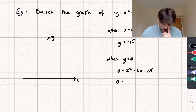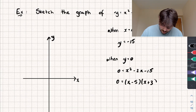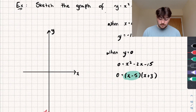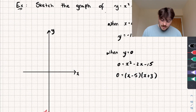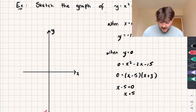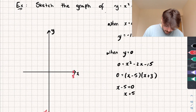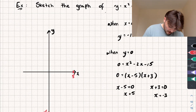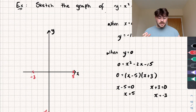Factorising gives us (x minus 5)(x plus 3) equals zero. Since two things multiply to give zero, either x minus 5 equals zero, giving x equals 5, or x plus 3 equals zero, giving x equals negative 3. So we've found the two roots of this quadratic and the point where it passes through the y-axis.